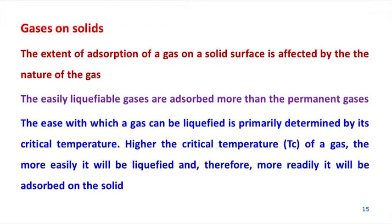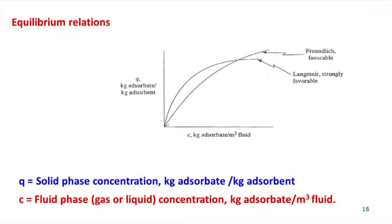The ease with which a gas can be liquefied is primarily determined by its critical temperature. The higher the critical temperature of a gas, the more easily it will be liquefied and therefore the more readily it will be adsorbed on the solid. We will now discuss the equilibrium relationship. The equilibrium between the concentration of a solute in the fluid phase and the concentration on the solid phase are plotted as adsorption isotherms, and some common types — namely the Freundlich and the Langmuir isotherms — are shown in this figure.